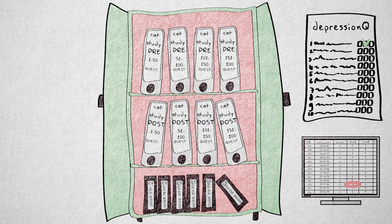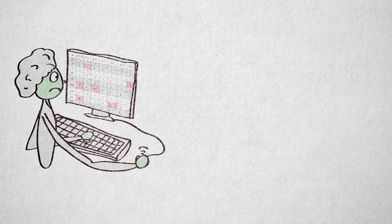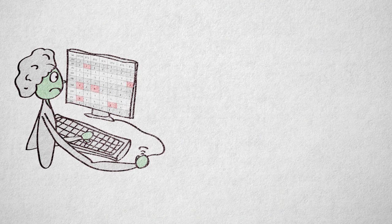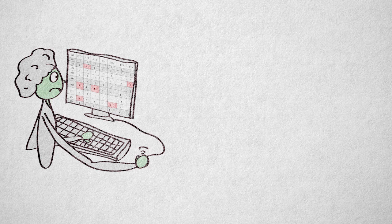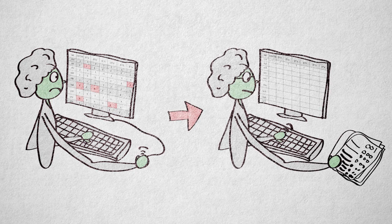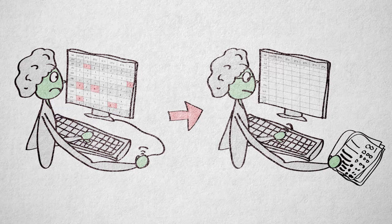When data are entered manually, it's always a good idea to let someone else enter a random selection of the data again and check for consistency. If it turns out the original entry is inconsistent, then all the data need to be entered again, but more carefully, of course.